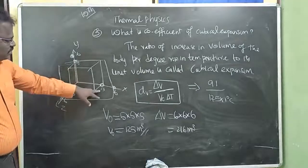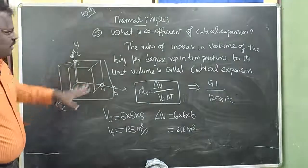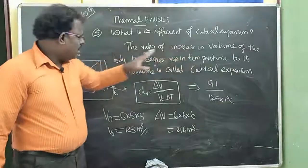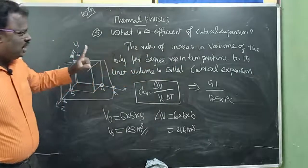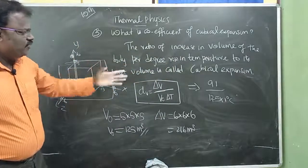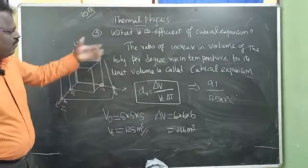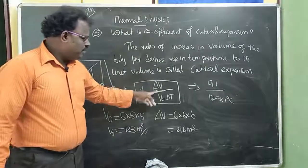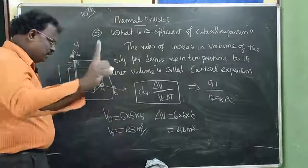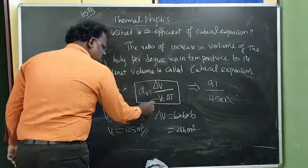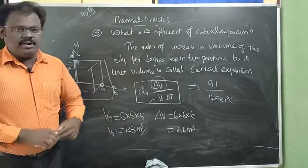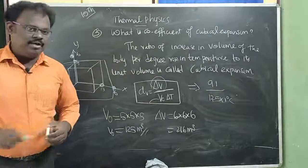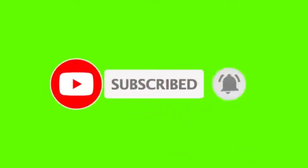So the ratio of increasing volume of the body per degree rise in the temperature, 1 degree Celsius. The ratio of increasing volume of the body to the original volume of the body. Thank you.